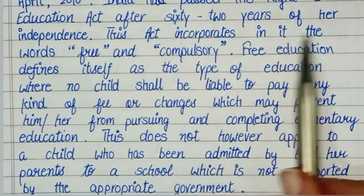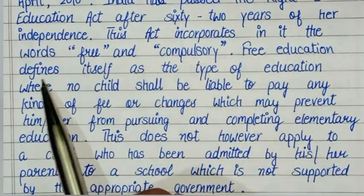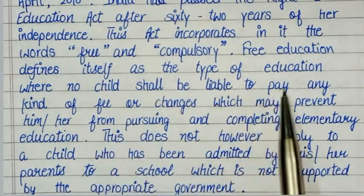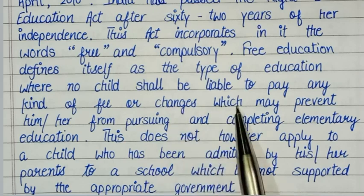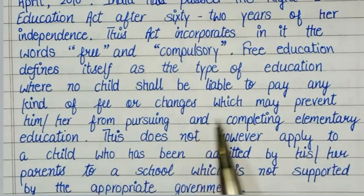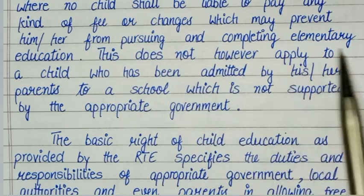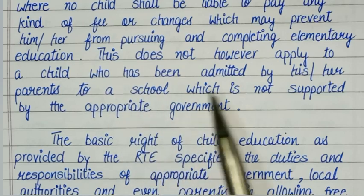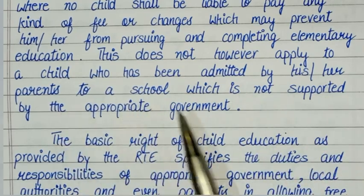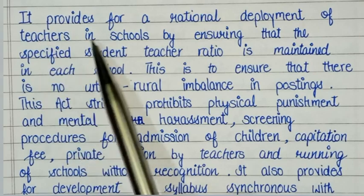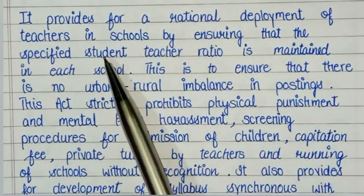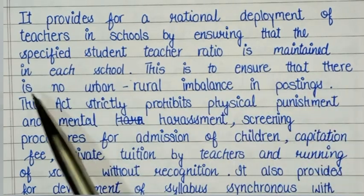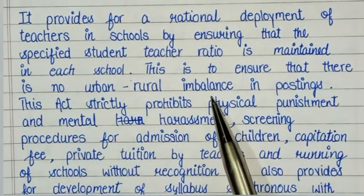This act incorporates the words 'free' and 'compulsory.' Free education means no child shall be liable to pay any fee or charges which may prevent him or her from pursuing and completing elementary education. This does not, however, apply to a child admitted by parents to a school not supported by the appropriate government. The act also provides for rational deployment of teachers by ensuring that the specified student-teacher ratio is maintained in each school, to ensure there is no urban-rural imbalance in postings.